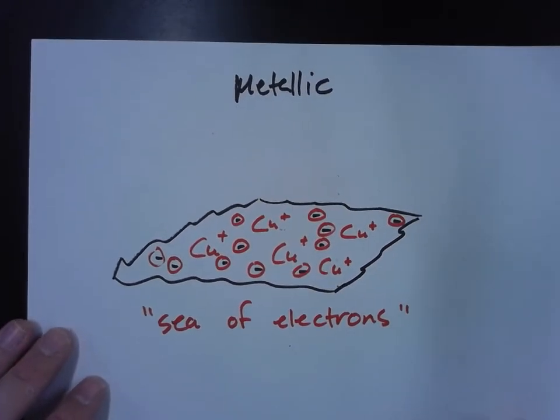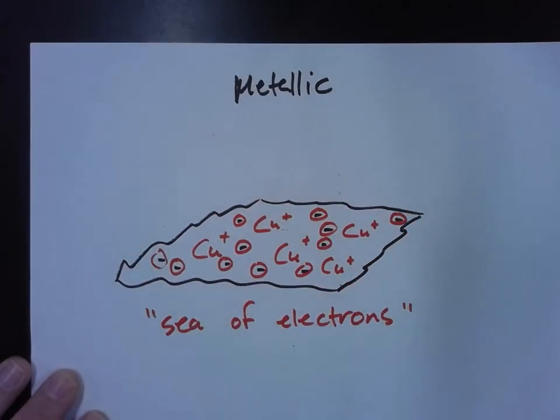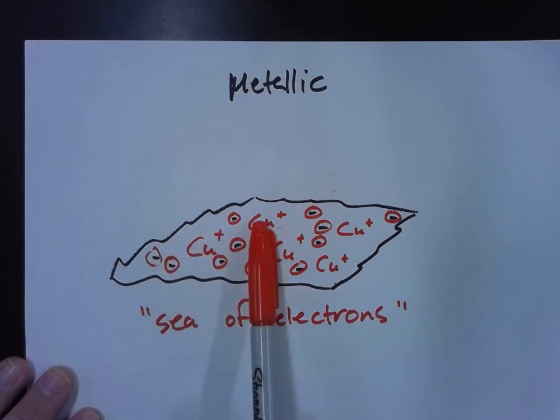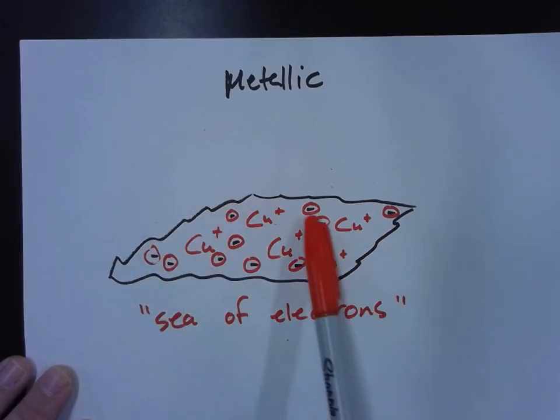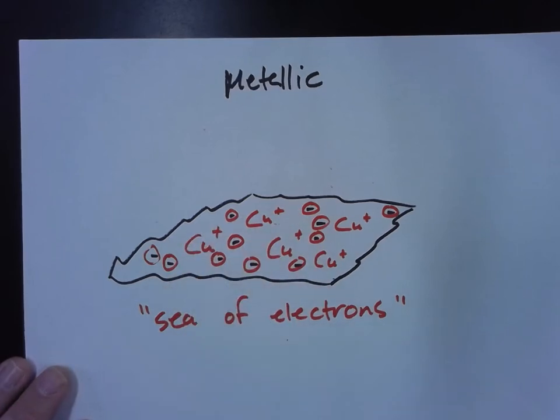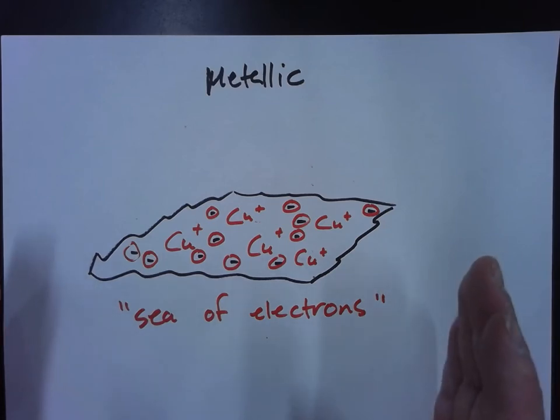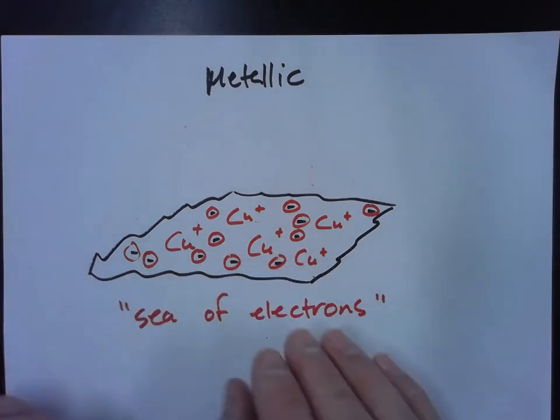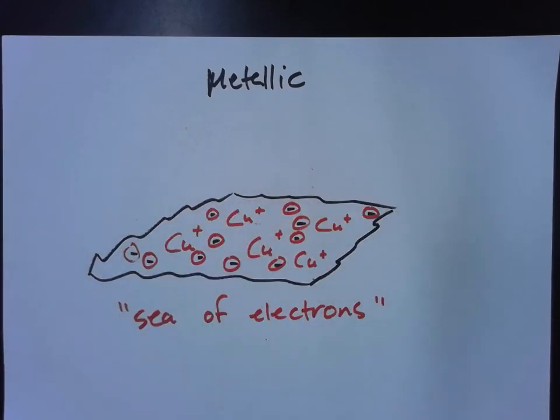And the last one is metallic. Metallic looks like this. Go ahead and draw it. This is supposed to be like a sheet of metal. And this is copper metal. And notice, look what's going on here. There's positive copper charges. And then kind of floating around these copper atoms is just this sort of sea of electrons. They're not in any really definitive or defined shape. It's just all of these trillions and trillions of atoms with their electrons kind of just moving about freely inside this, what we call a sea of electrons. That concludes Supplemental Notes 6.1.